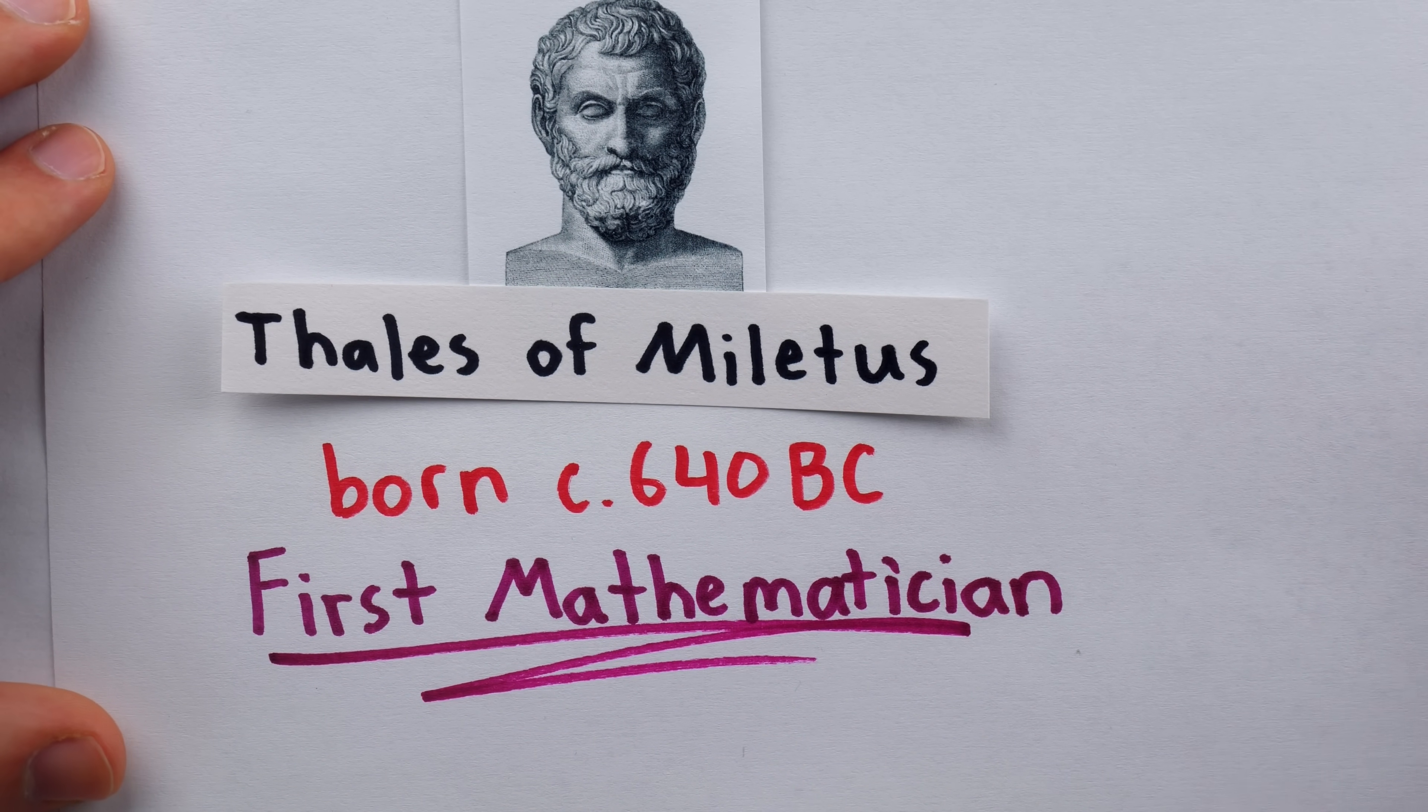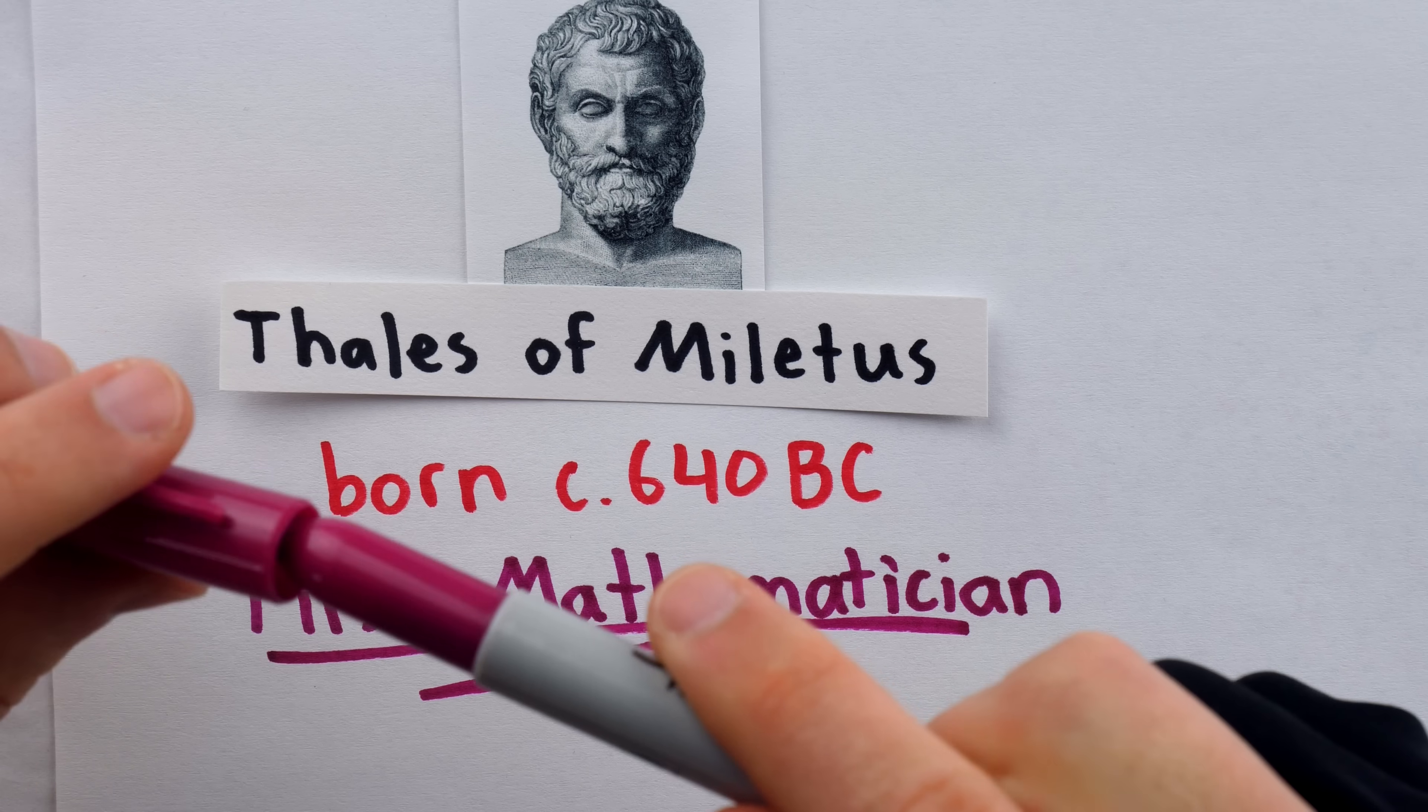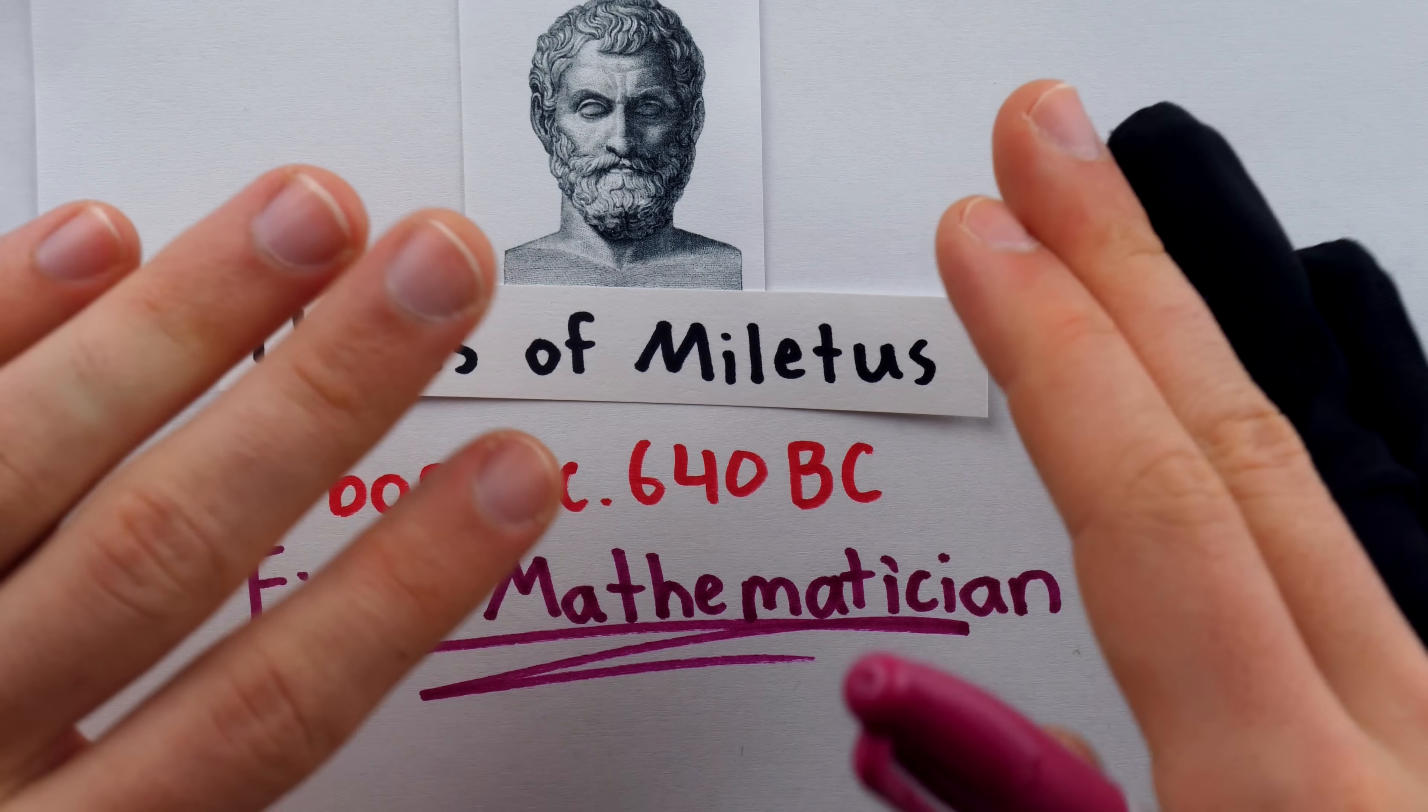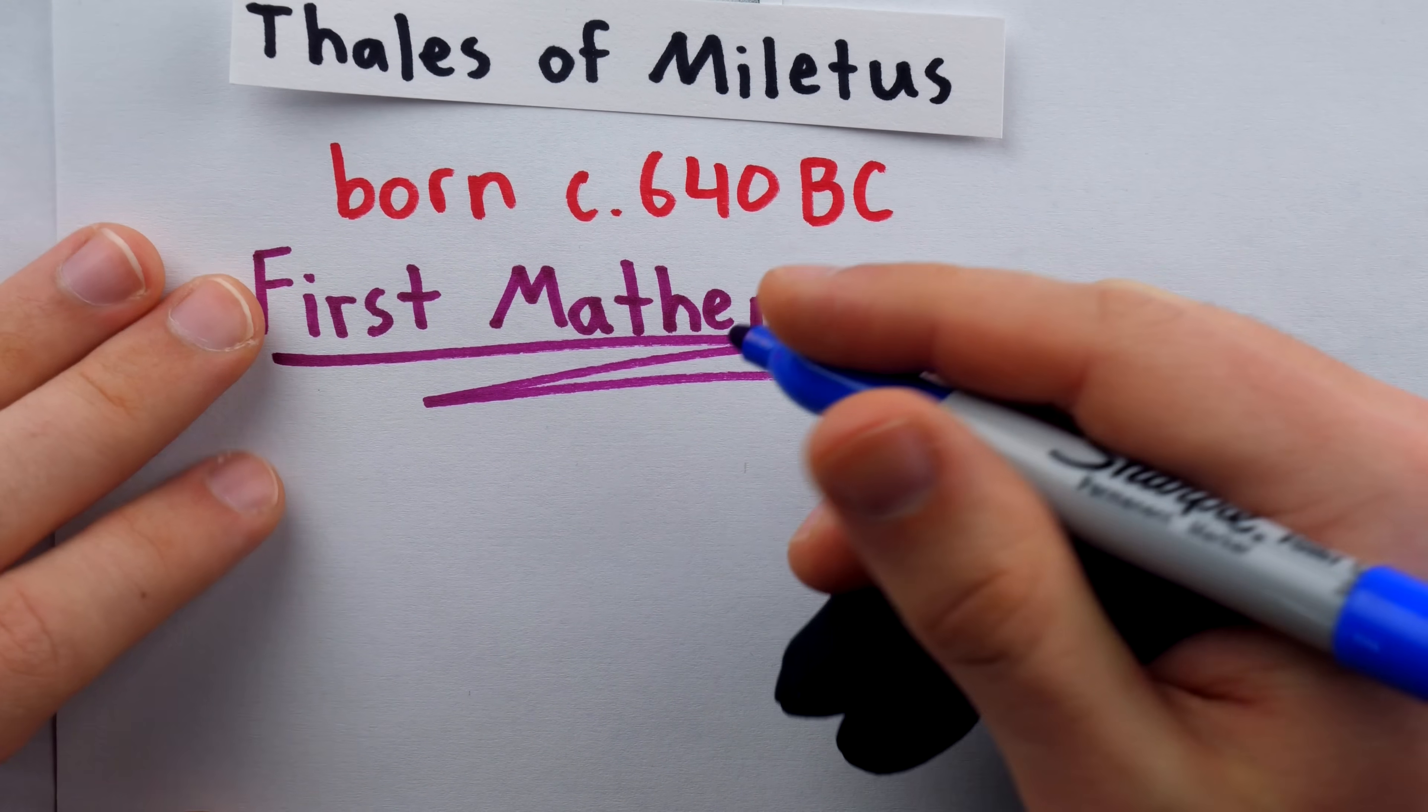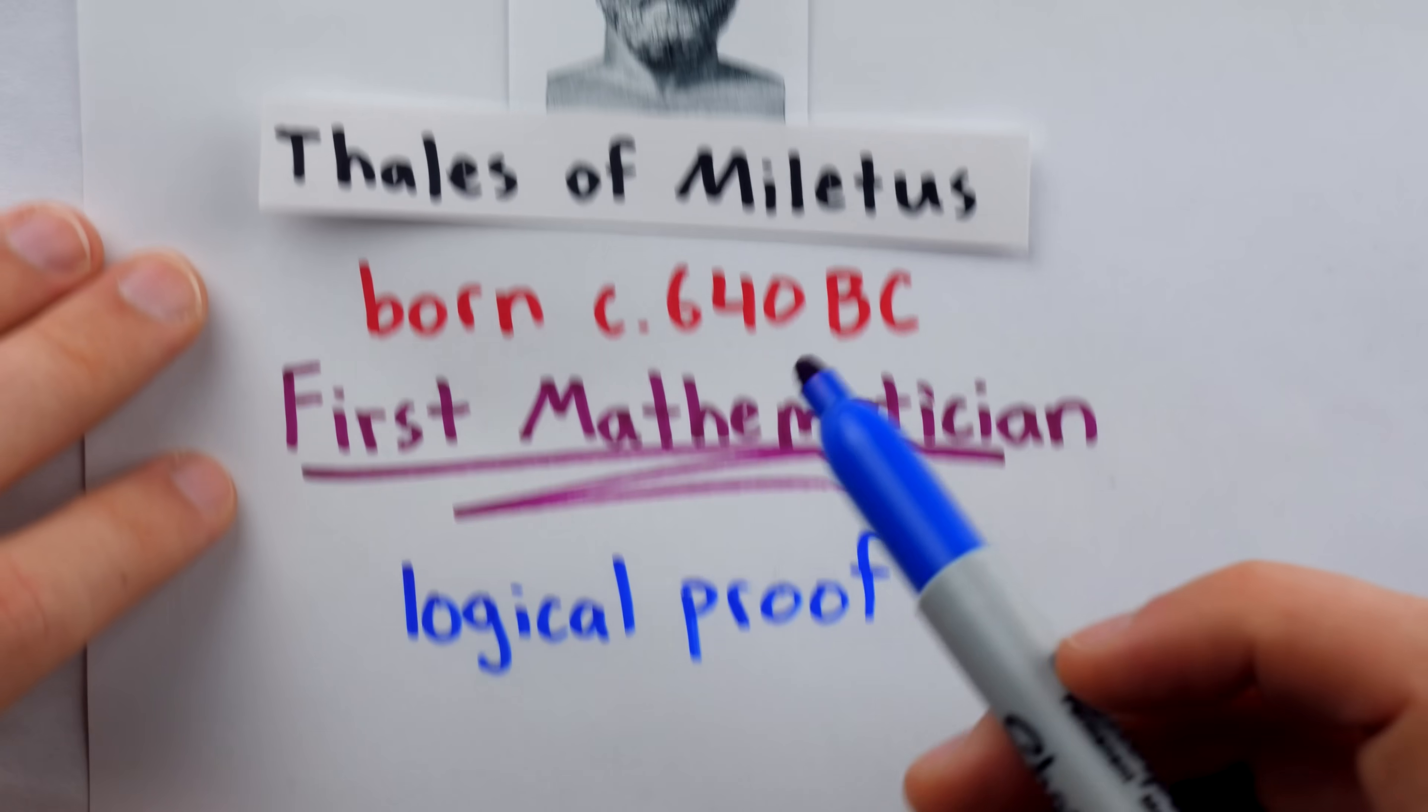Now, what does that title even mean? Well, a more clear title that is often also used to describe him is that he is the father of demonstrative mathematics. This means that he was the first known person to actually demonstrate geometric statements to be true. In so doing, he introduced logical proof.